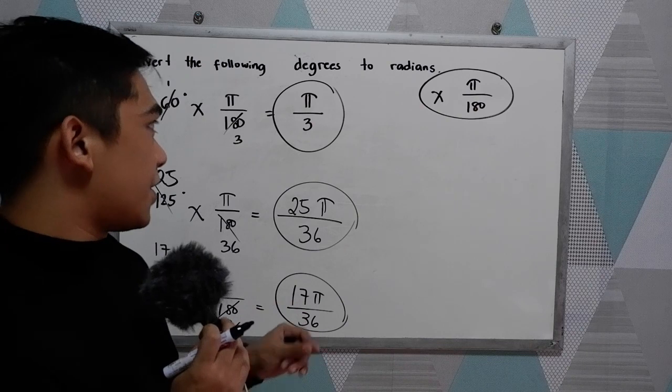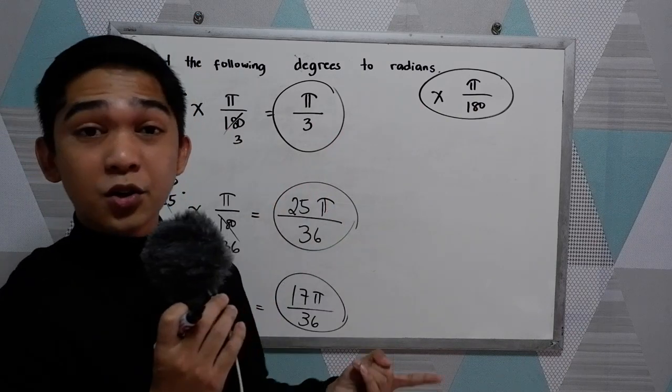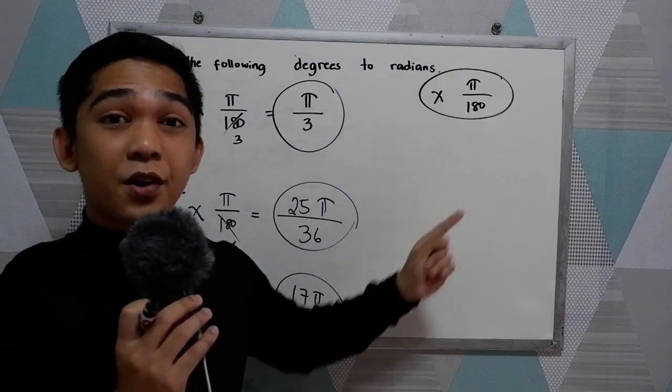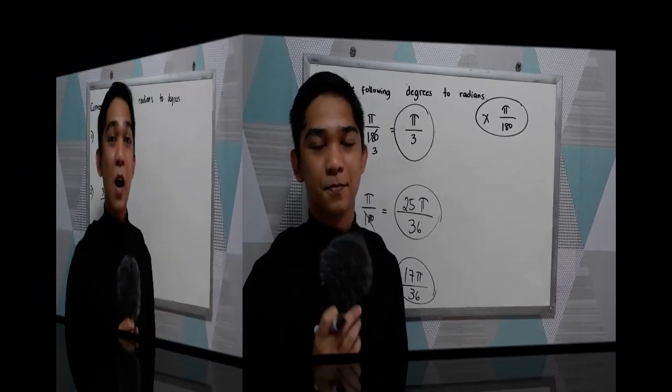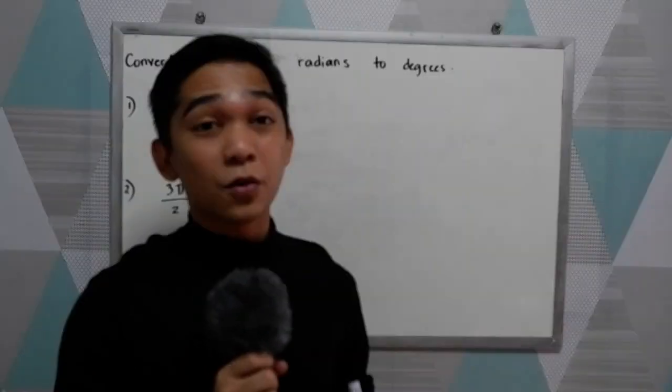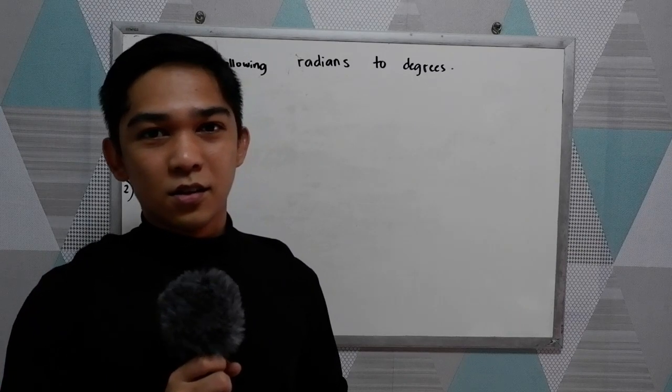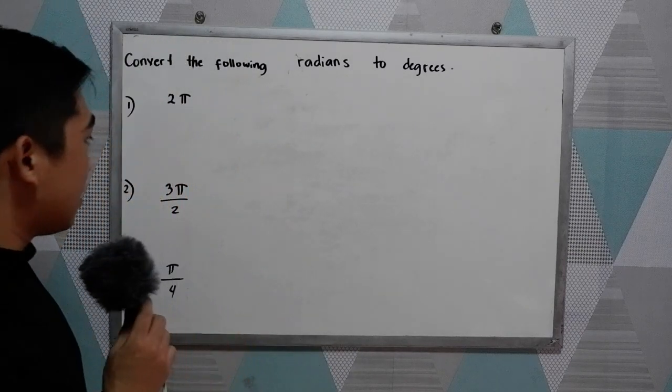So that's how to convert degree measure to radian measure. Just multiply it by pi over 180. Now let's have exercises on how to convert radians to degrees. So let's have the following.